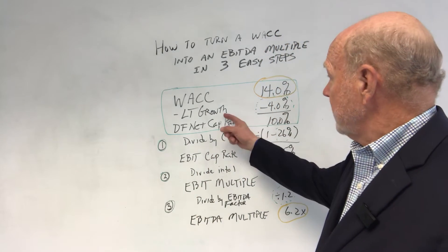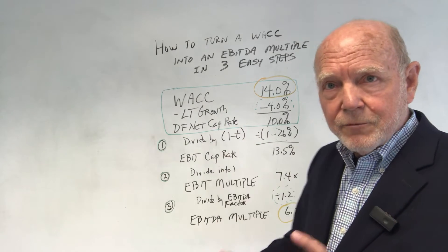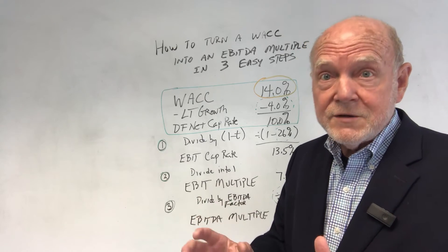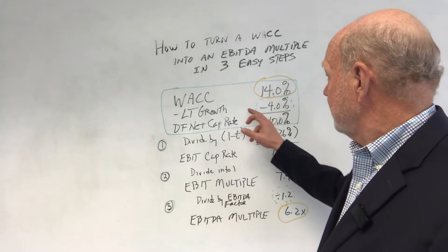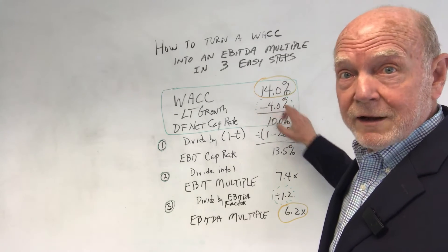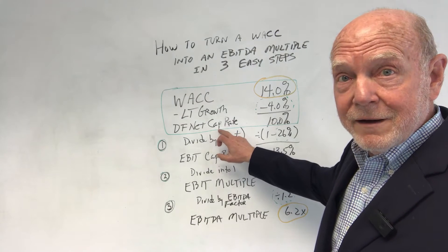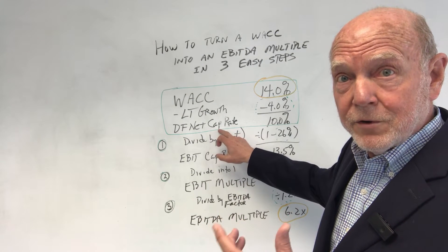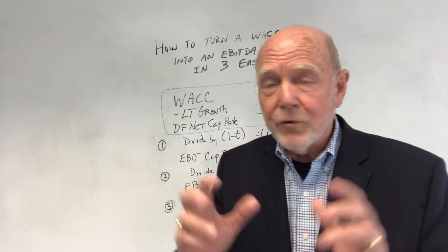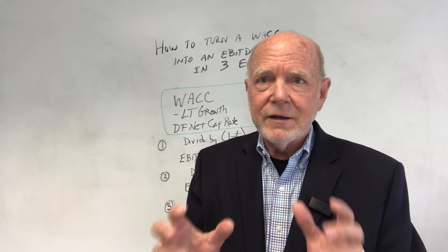Based upon analysis, the long-term growth rate is assumed to be four percent — that might be two percent to five percent, plus or minus a little bit, but in this case it's four percent. Market participants and business appraisers do this all the time. We subtract that from the WACC and we get ten percent. Ten percent is a debt-free net income, or net cash flow, capitalization rate.